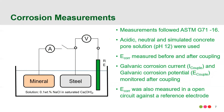Corrosion measurements followed ASTM G71. You can see a schematic of the experimental setup on the slide. A mineral and steel samples were placed in the bath. They were connected together through an ammeter and a switch, and with a voltmeter set up to measure the voltage when the samples were connected. A reference electrode was also placed in there for the purpose of measuring the voltage. In the schematic you can see that we have a salt bath to improve the conductivity, so the circuit was connected through the salt bath.